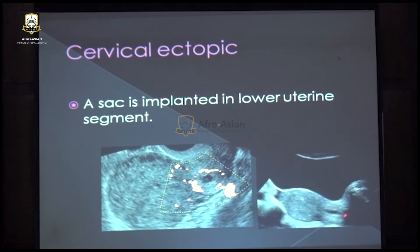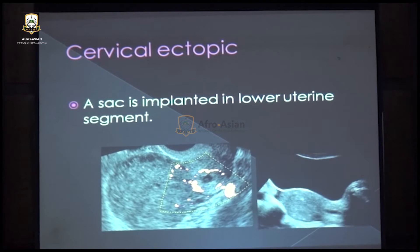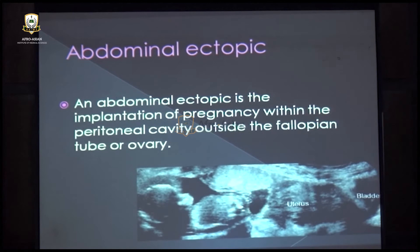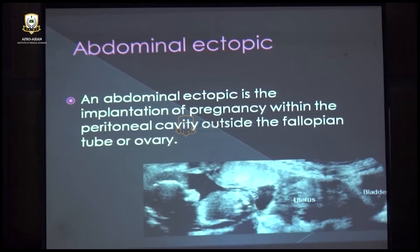In cervical ectopic pregnancy, the pregnancy implants in the lower part of the uterus; on transvaginal scan you see the yolk sac and gestational sac within the cervix. Abdominal ectopic is when implantation occurs outside the uterus — the uterus will be empty and the fetus visible outside. Heterotopic gestation is simultaneous implantation of ova — one within the uterine cavity and one outside in the tubal area.